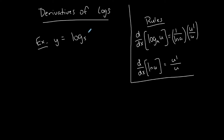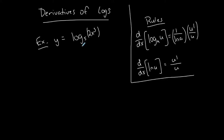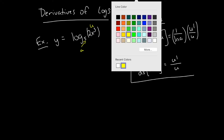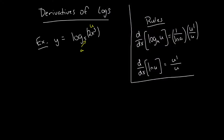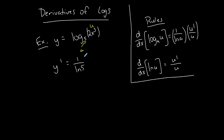Let's say that I have log base 5 of 2x to the third. Comparing this function to the rule, the base of this log is 5, so that's my a. And the u, the function attached to the log, is 2x to the third. So the first derivative, y prime, is equal to 1 over ln of a, which is 5, times u prime over u. The derivative of 2x to the third is 6x squared, divided by u, which is 2x to the third.